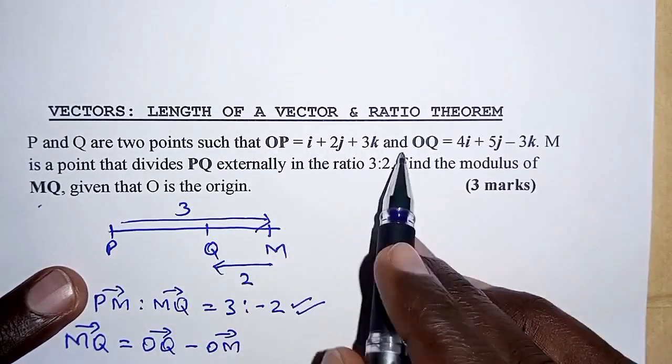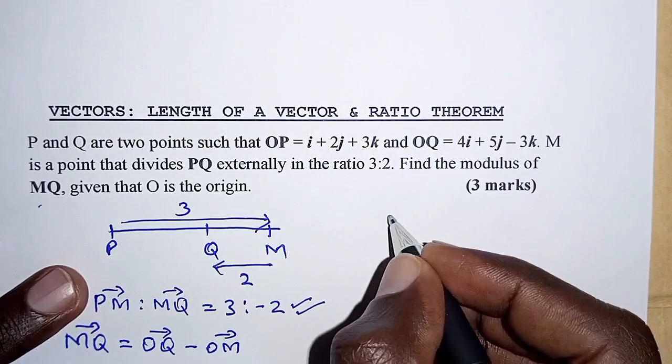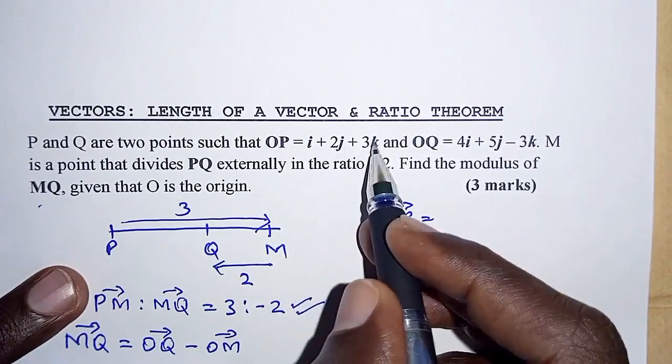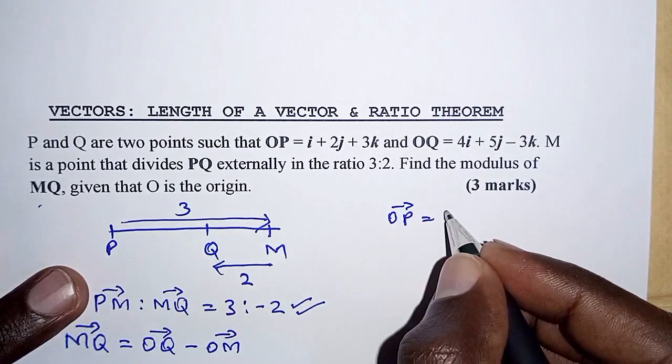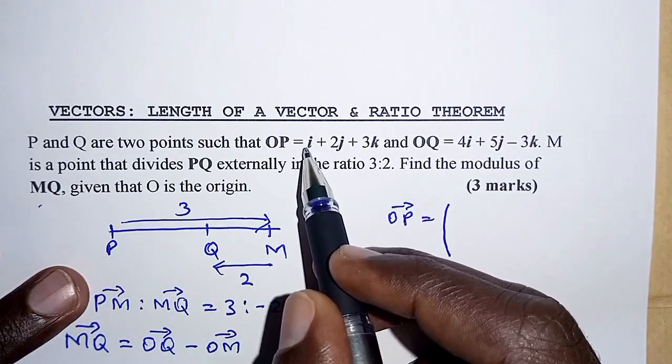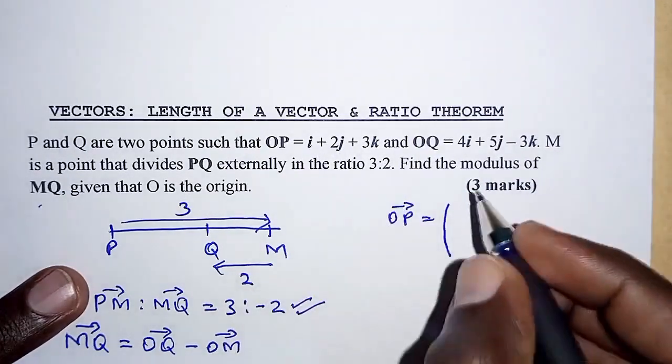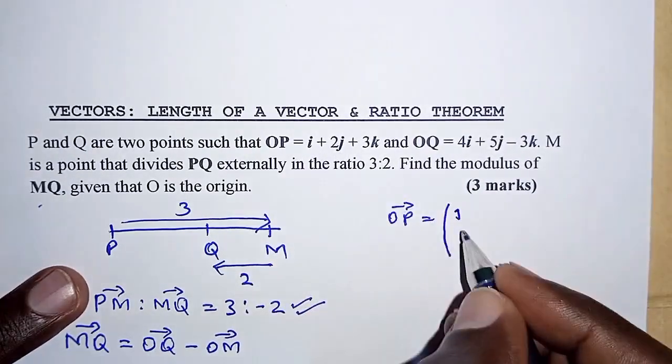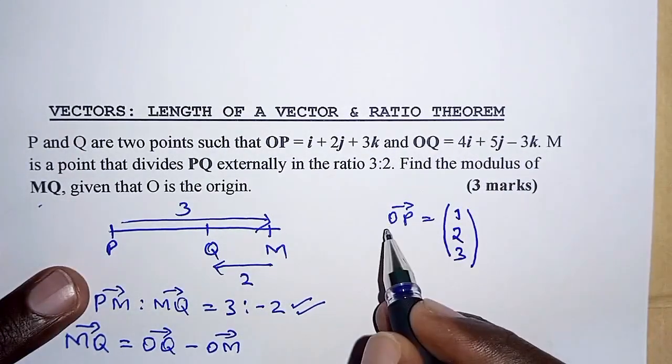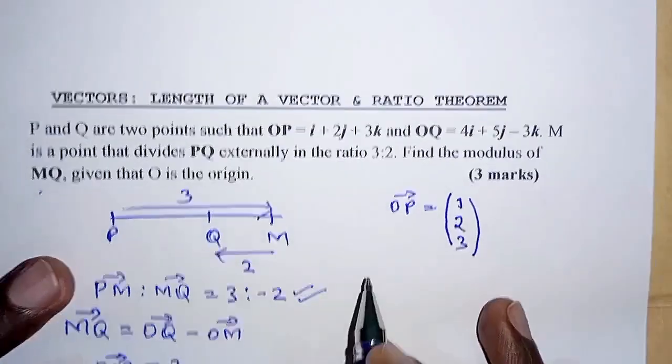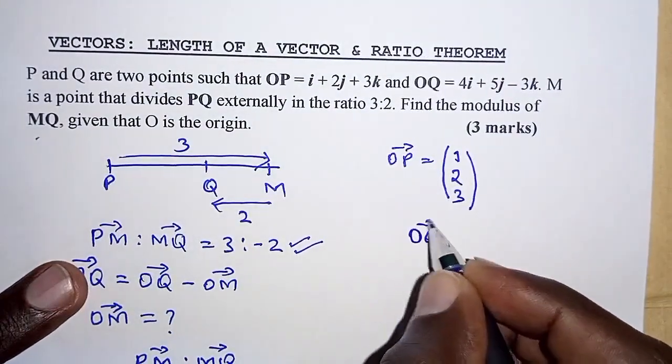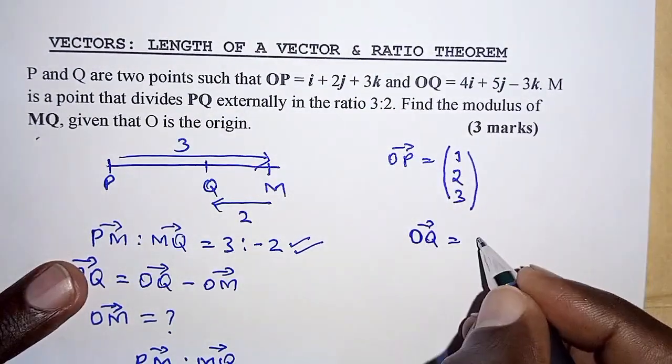OP given in terms of the unit vectors can be written as, we have OP equals i + 2j + 3k, so we can have it as a column vector just writing the coefficients of these unit vectors. Here it is 1i so we have 1, 2j so we have 2, 3k so we have 3. So that is vector OP. The same can apply to vector OQ. OQ is (4, 5, -3).